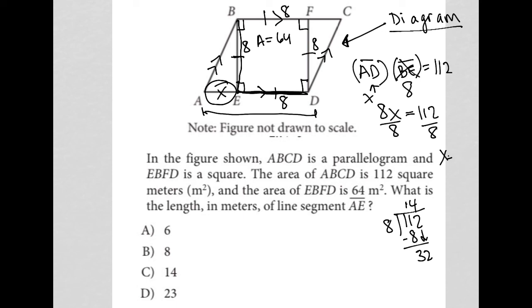And therefore, X is equal to 14, which means that AD, this entire length is 14. So if the entire length is 14 and ED is 8, that means AE must be 6 because 14 minus 8 equals 6. And therefore, the answer is choice A.